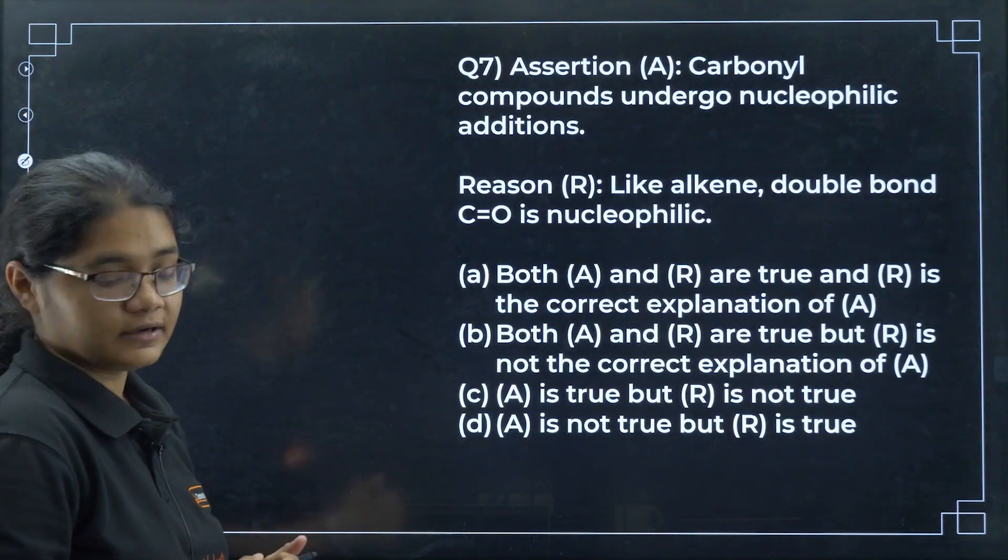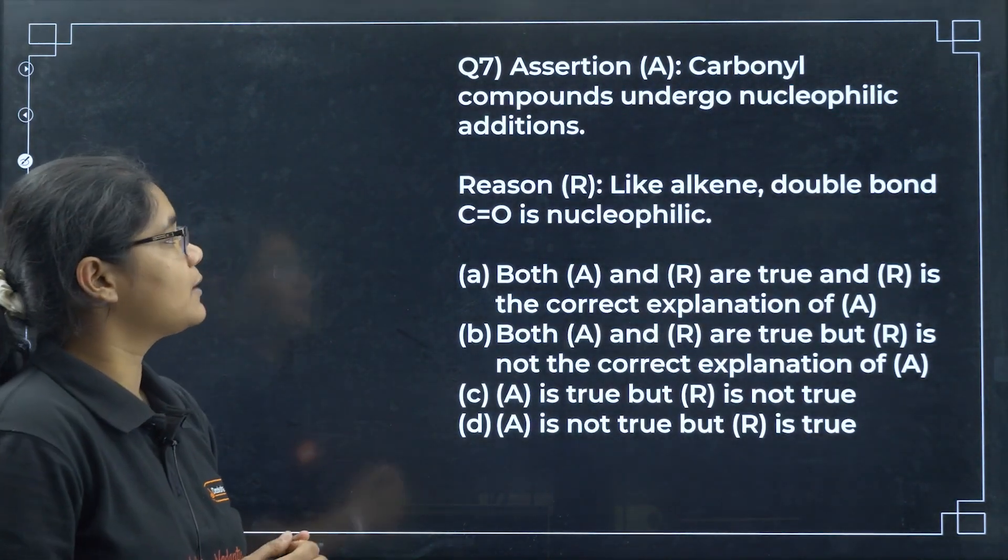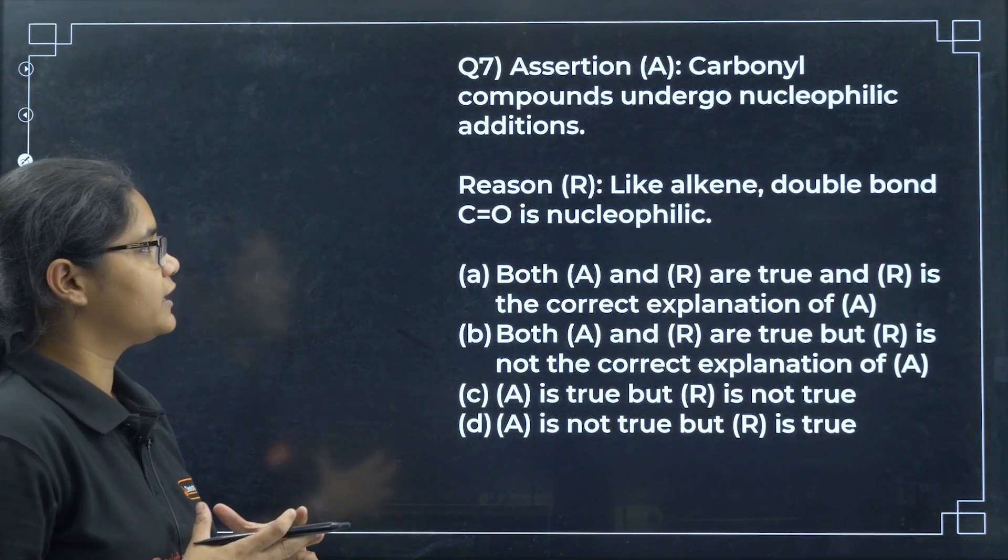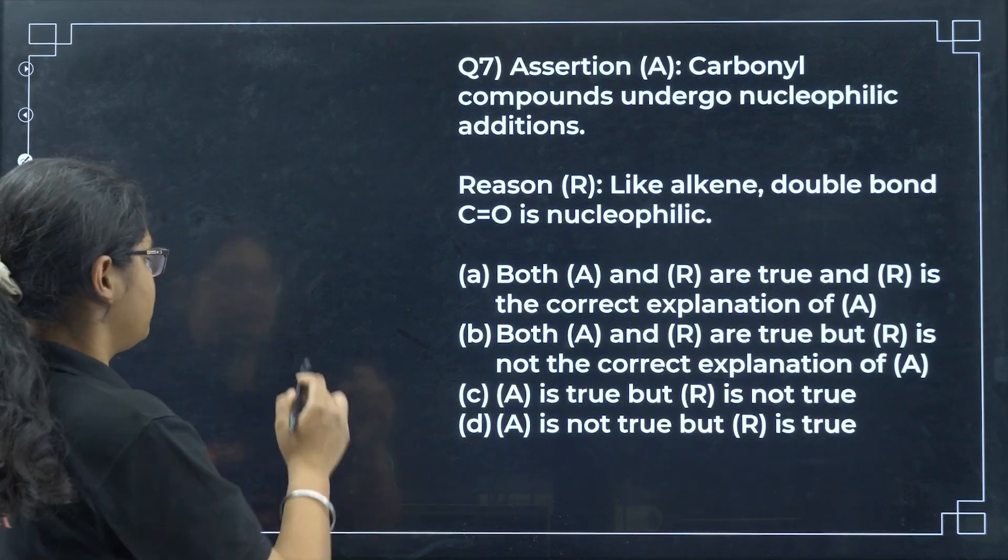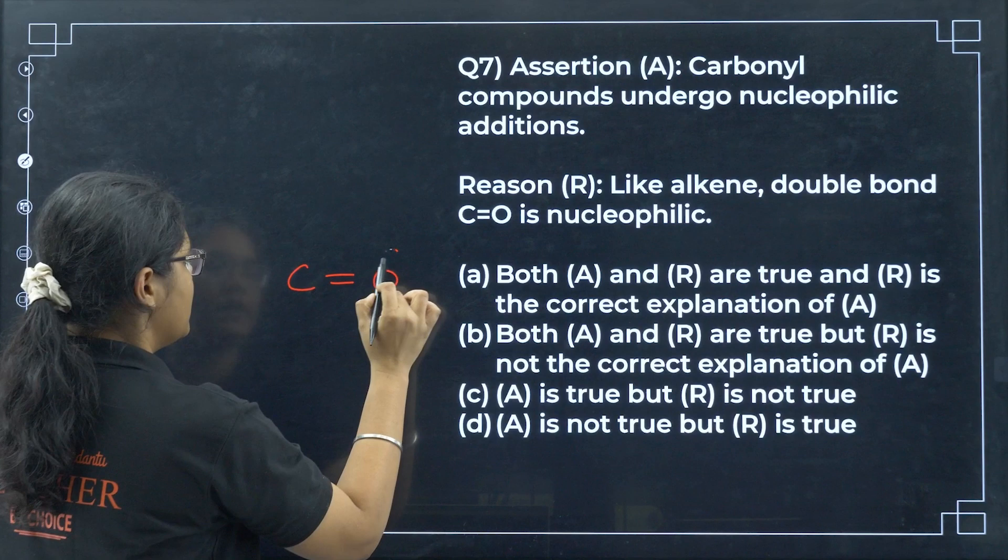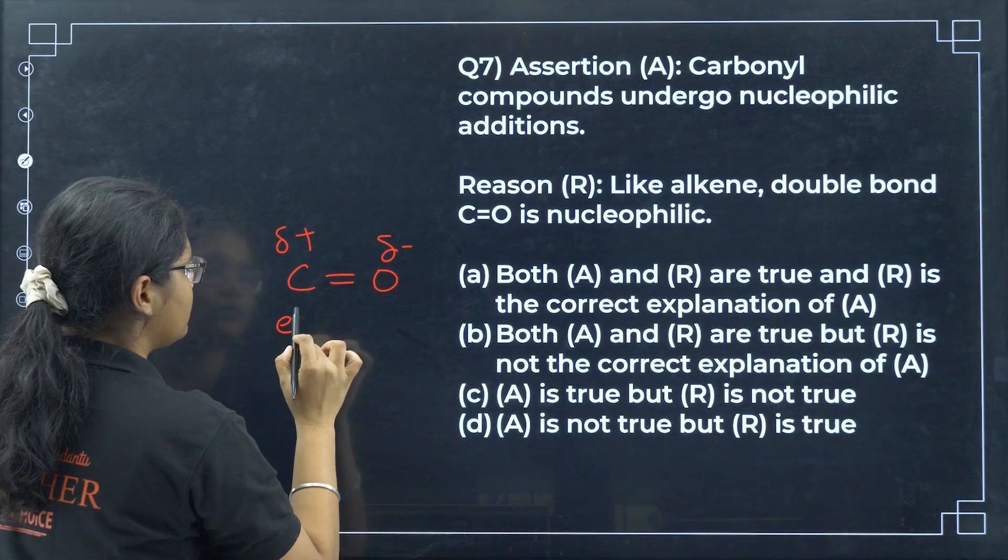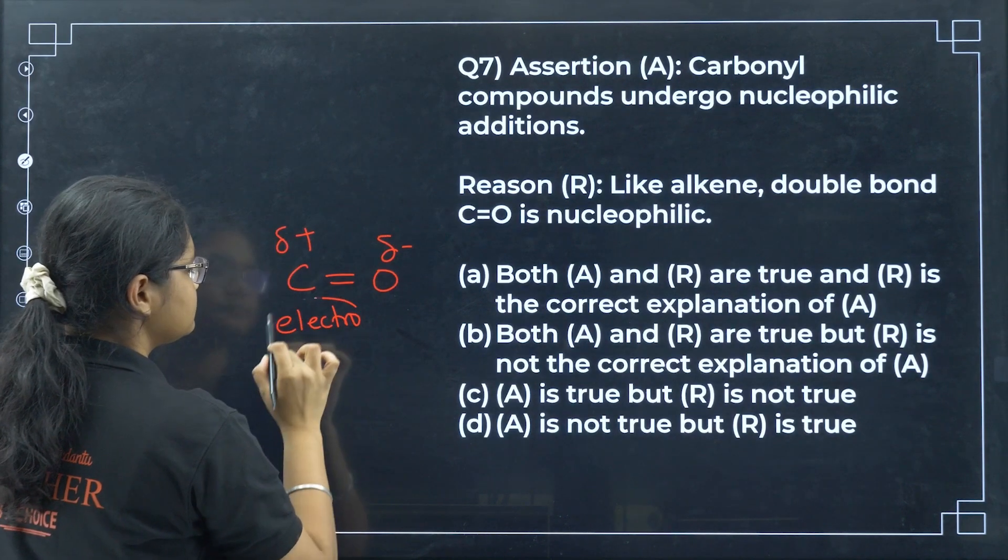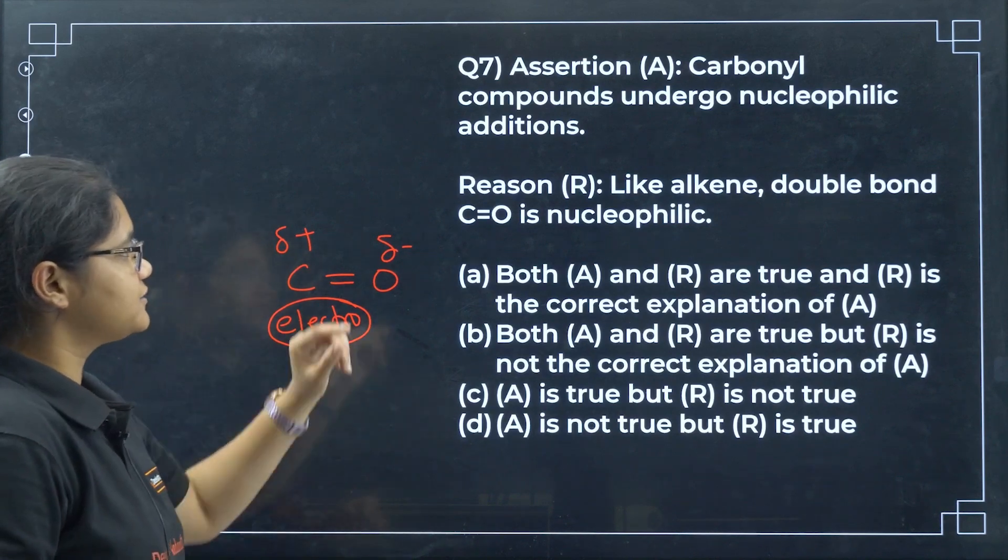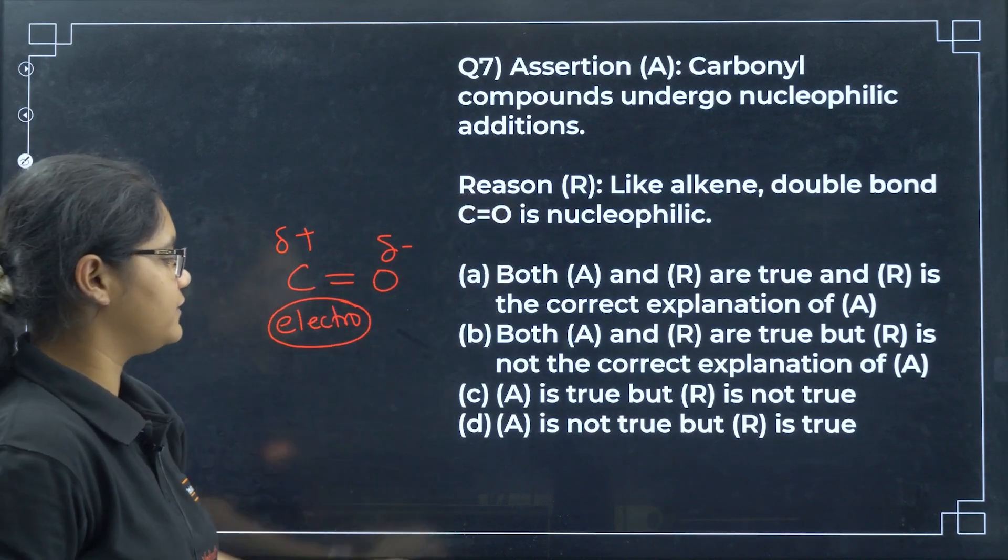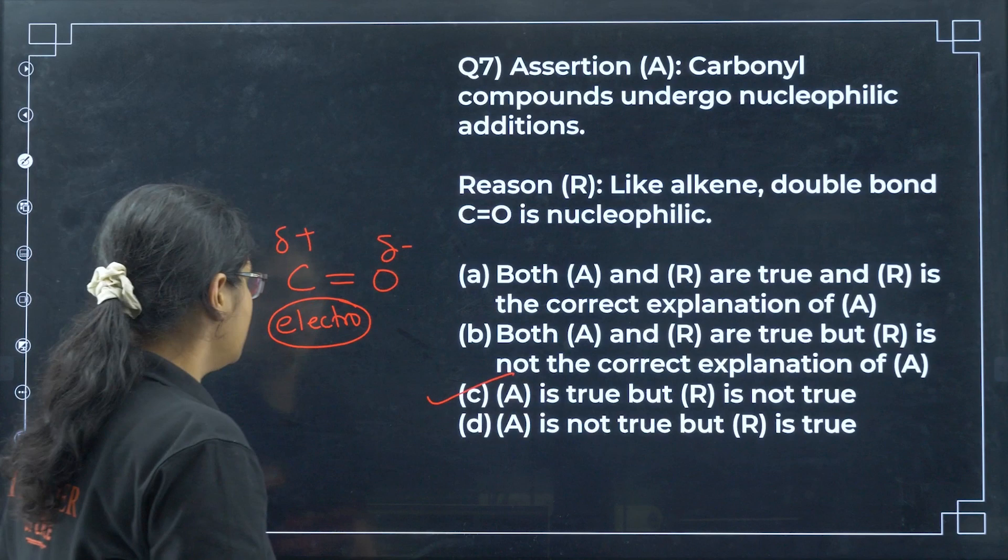Here I have an aldehyde, here a ketone, here an aldehyde and here also an aldehyde. The nucleophile will attack on this carbon, so the ring should be electrophilic. The NO2 group is an electron withdrawing group, so it will pull the electron density. This ring is more electrophilic, so nucleophile will be attacking here fastest. Option D.